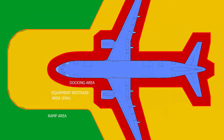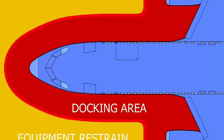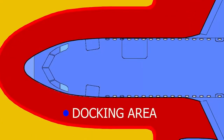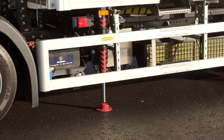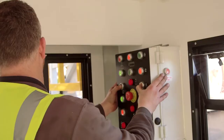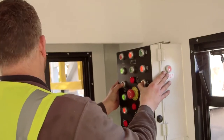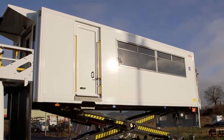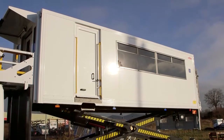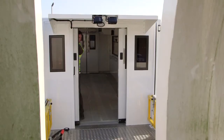When Ground Support Equipment reaches the docking area, the system automatically applies the brake and inhibits the forward drive in order to eliminate any possibility of crashing with an aircraft. Only reverse direction of movement is allowed.